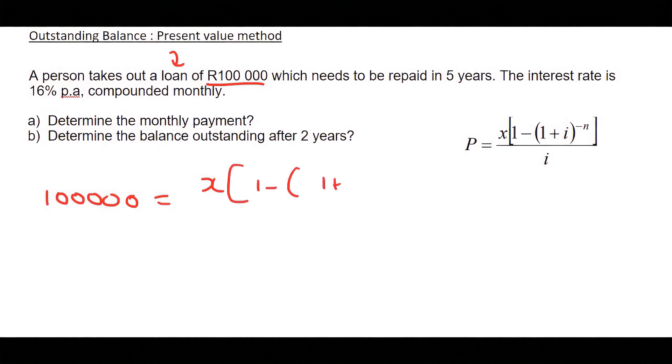The interest rate is 16%, which I like to say 0.16 over 12. And then the number of payments will just be 5 times 12, which is 60.